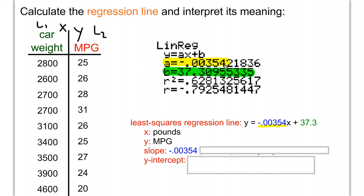The slope is always rise over run, or y over x. You might want to write that down. The units for y are miles per gallon, and for x are pounds. So the slope units are miles per gallon per pound.